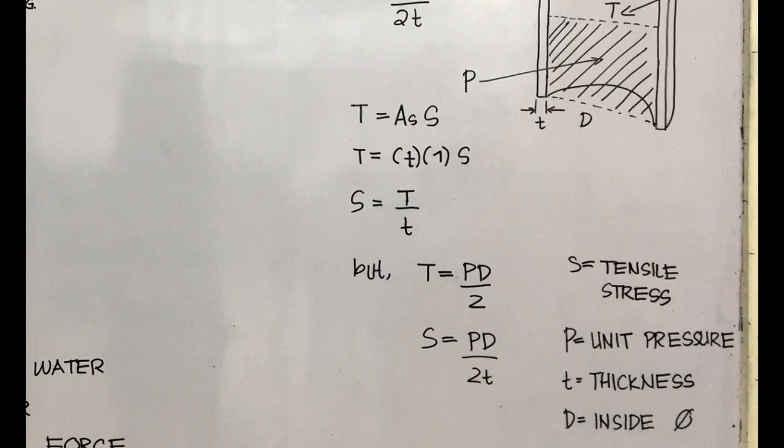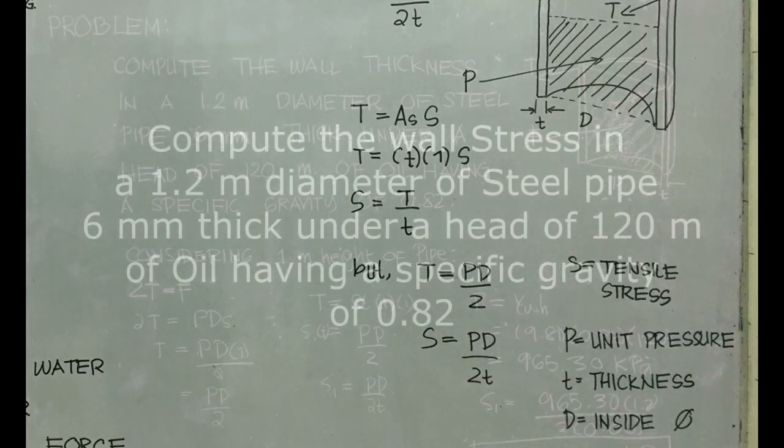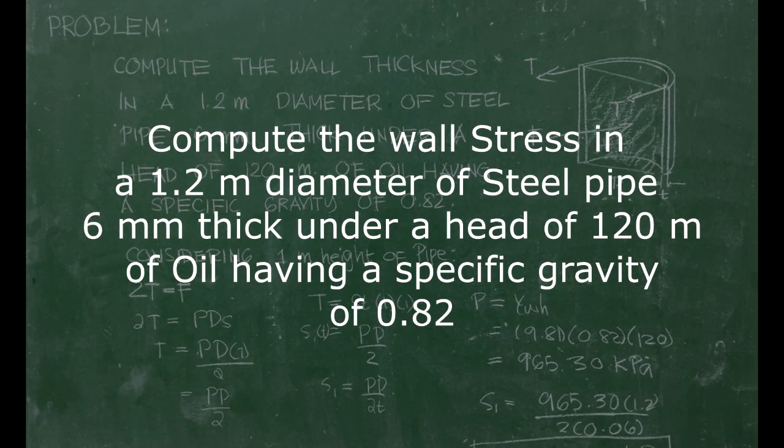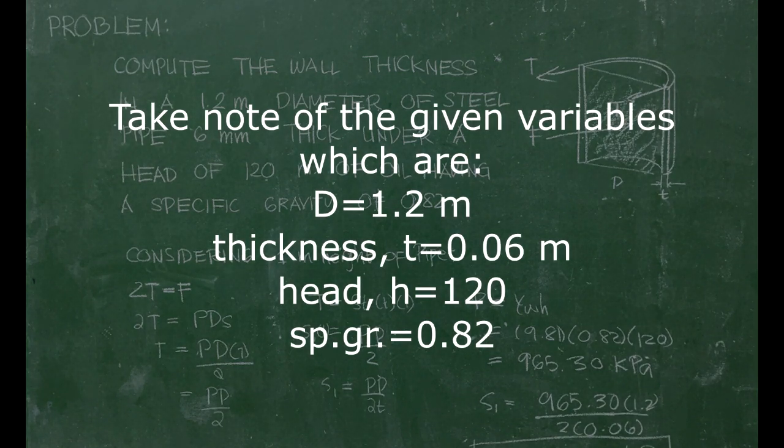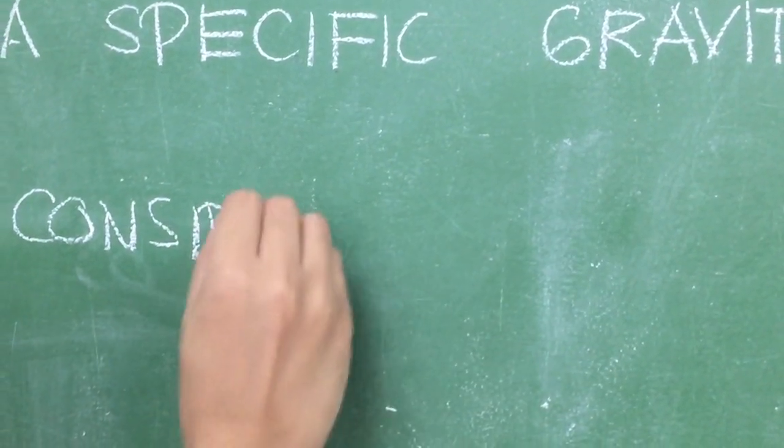Now let's jump into the example. Compute the wall stress in a 1.2 meter diameter steel pipe, 6 millimeter thick, under a head of 120 meters of oil having a specific gravity of 0.82. Take note of the given variables: D equals 1.2 meters, thickness t equals 0.006 meters, height of 120 meters, and specific gravity of 0.82.